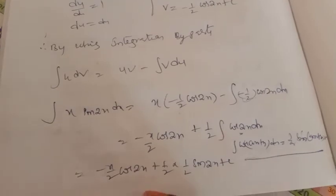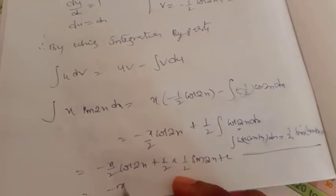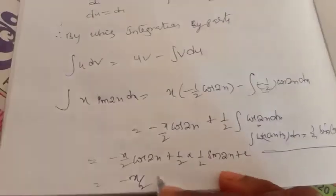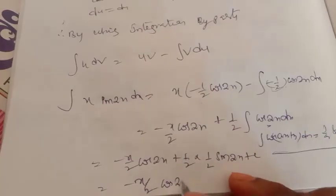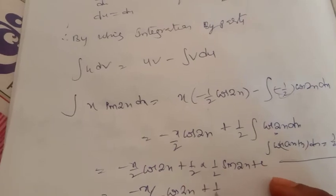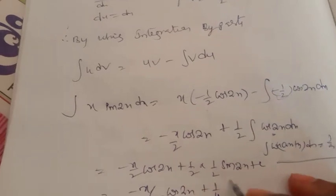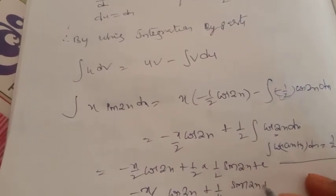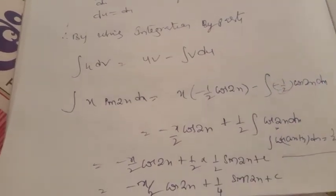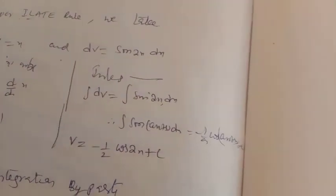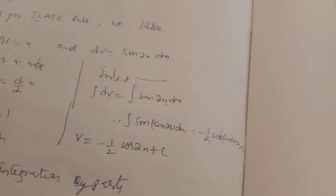That equals minus x cos 2x by 2 plus 1 by 2 into 1 by 2 into sin 2x plus c, which simplifies to minus x cos 2x by 2 plus 1 by 4 into sin 2x plus c. That is the answer to this problem.